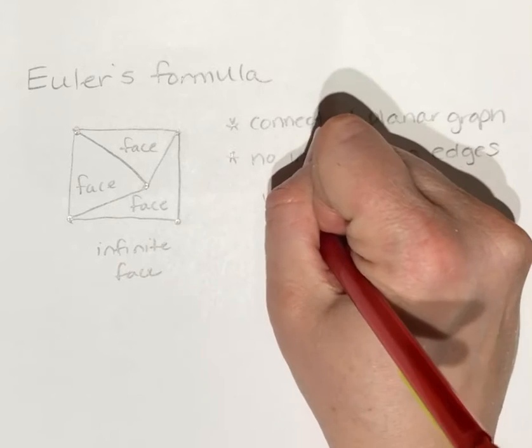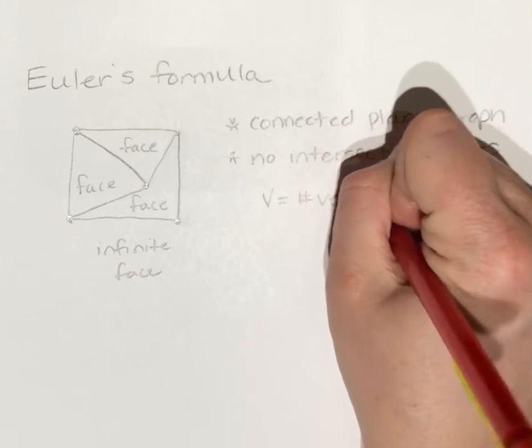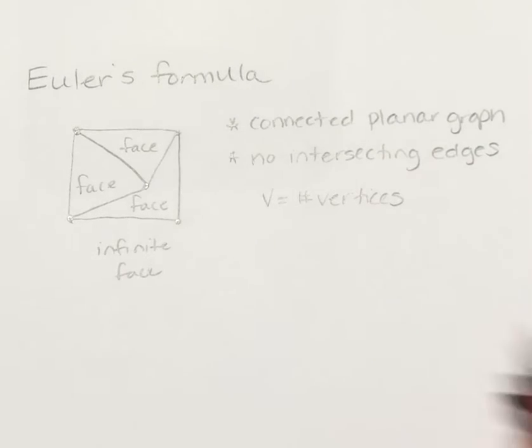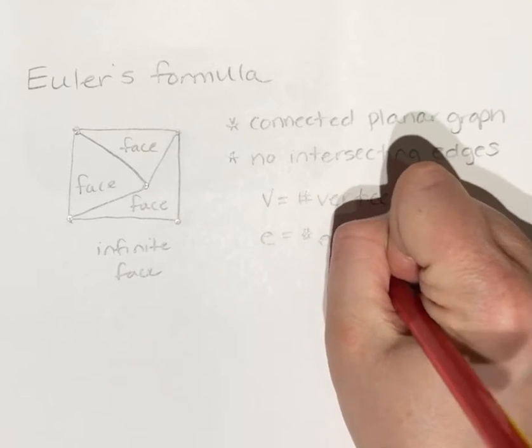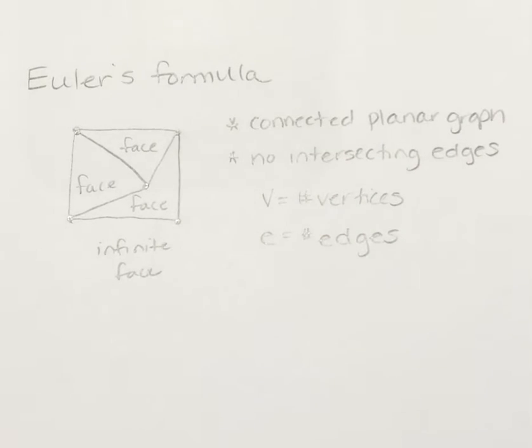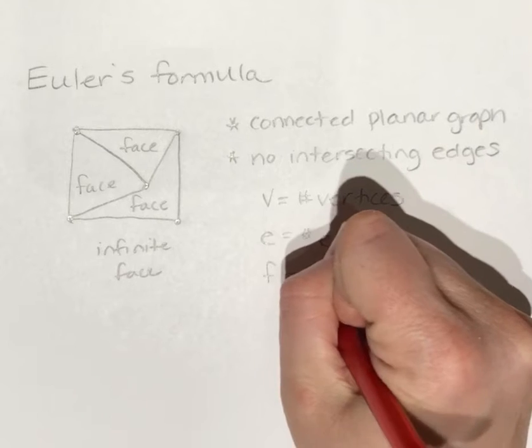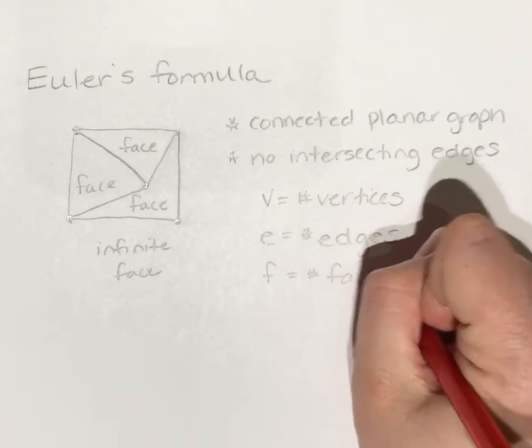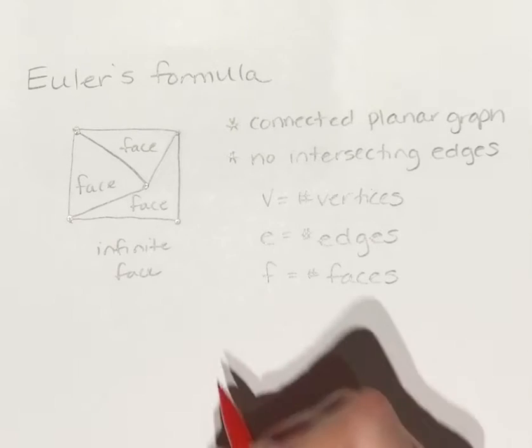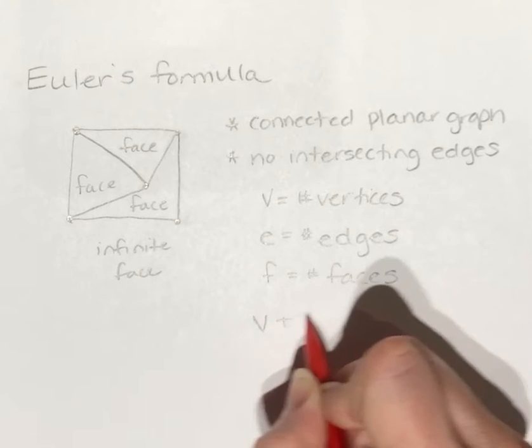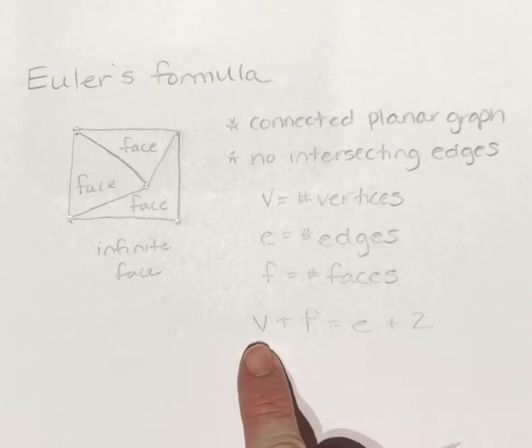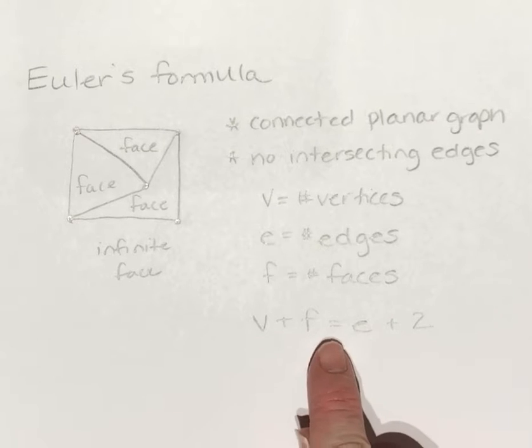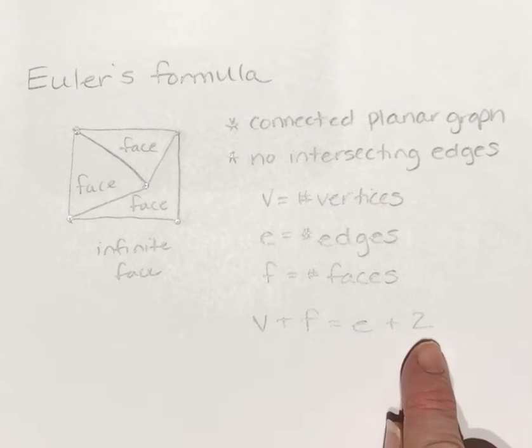So V is going to be the number of vertices. E is going to be the number of edges. So the formula is V plus F is going to equal E plus 2. The number of vertices plus the number of faces is going to equal the number of edges plus 2.